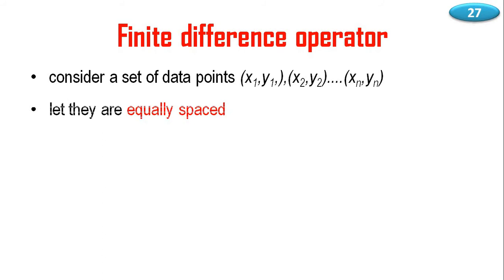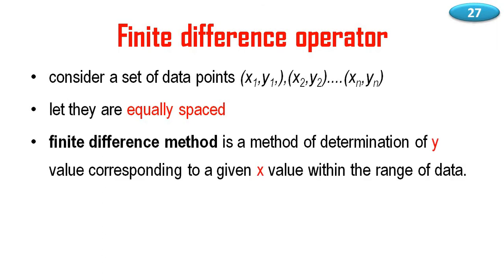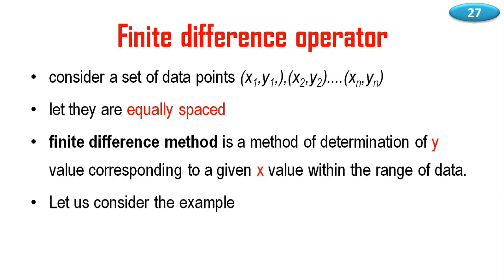Let them be equally spaced, meaning x1 minus x2 equals x2 minus x3 equals x3 minus x4, and so on. The finite difference method is a method of determination of the y value corresponding to a given x value within the range of data.